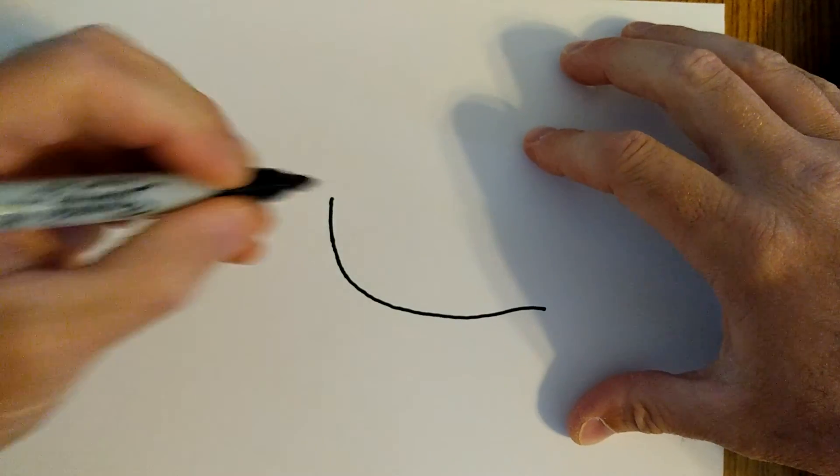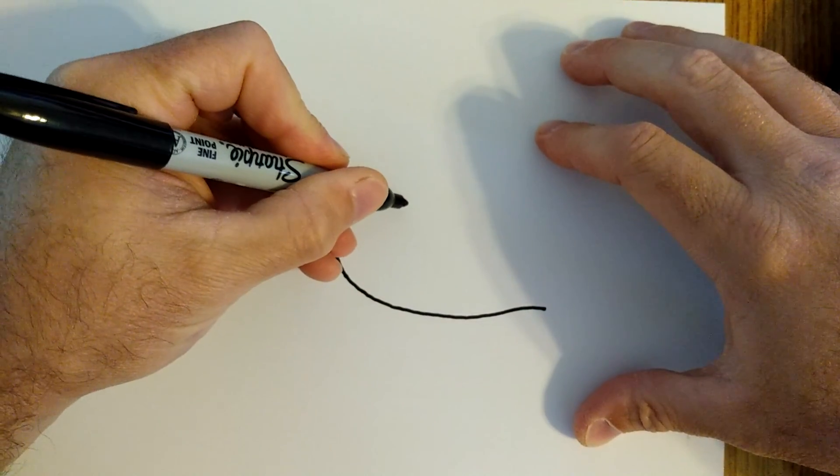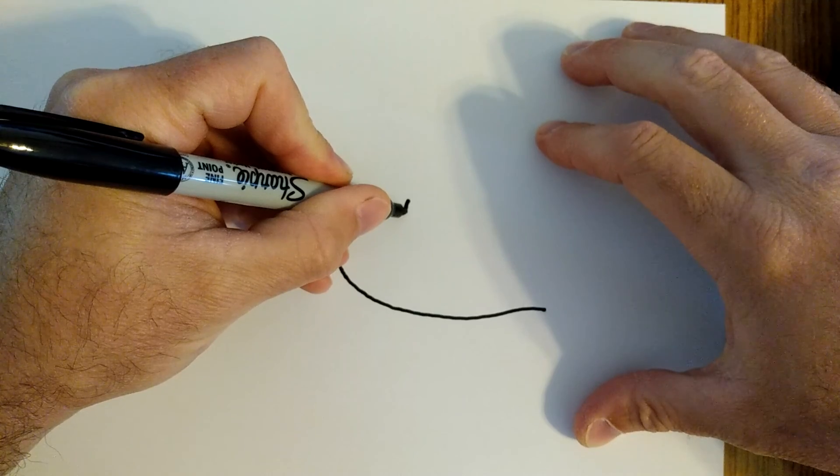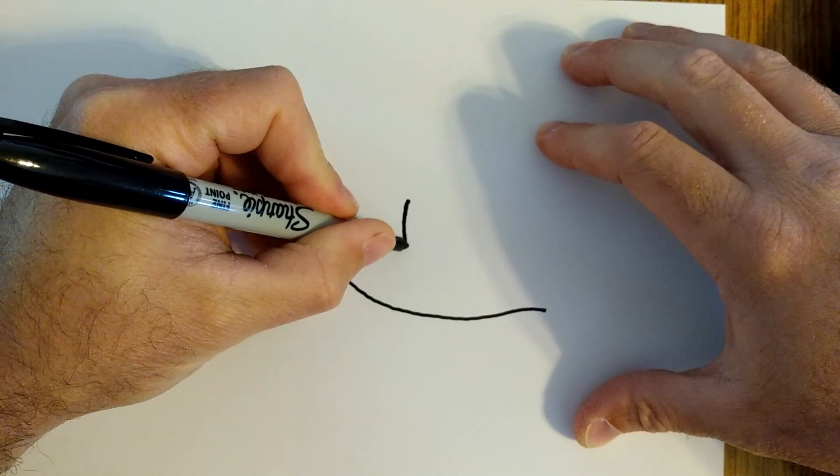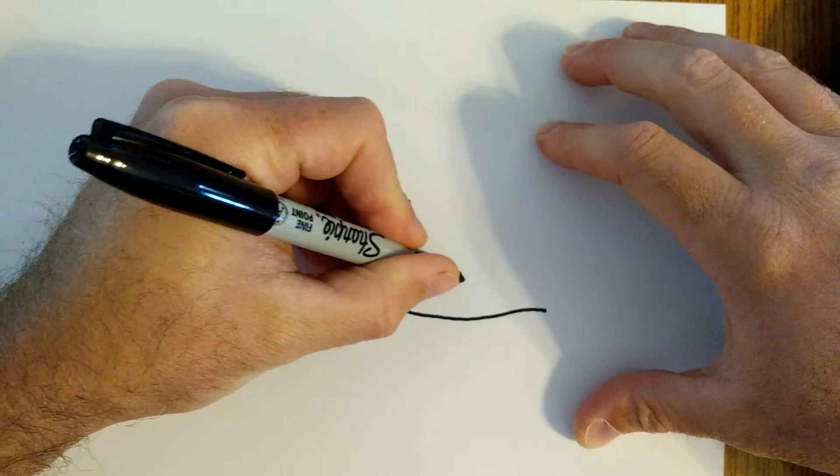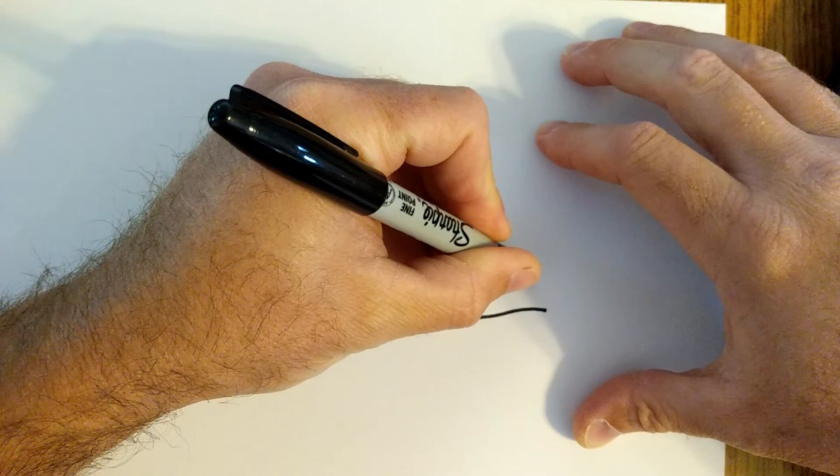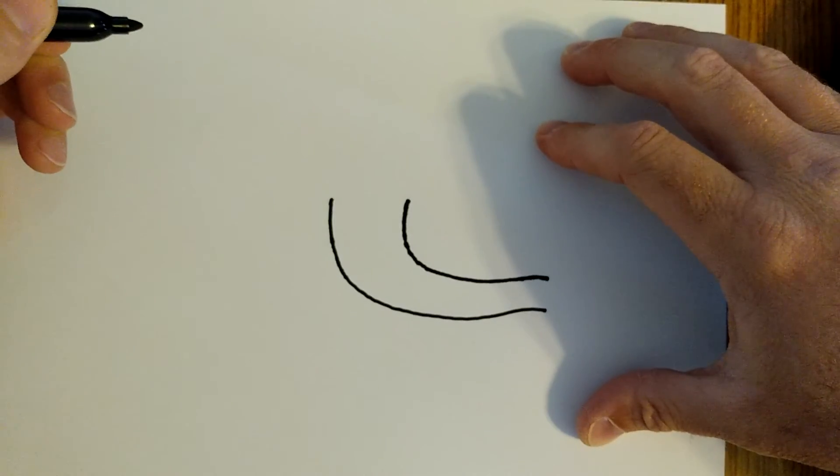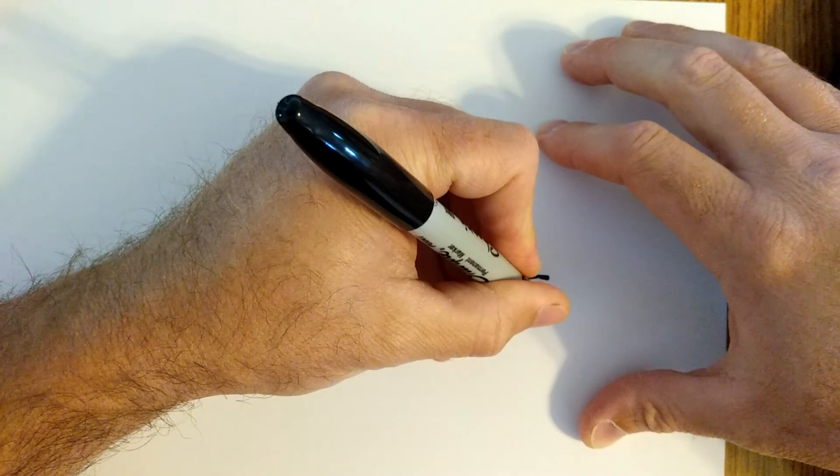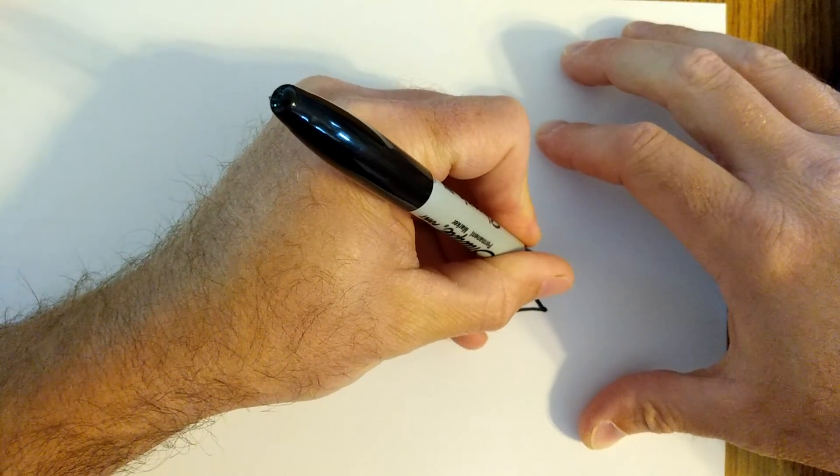You're going to start by drawing a curved line like that. Next you're going to do another one. It's going to start thick, but as you get down to that other line, the trunk needs to get skinnier like that.